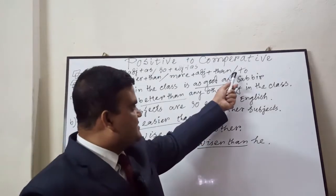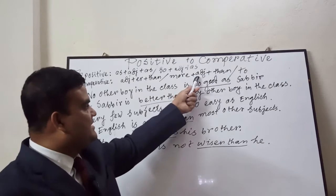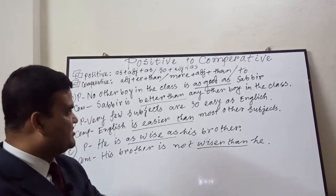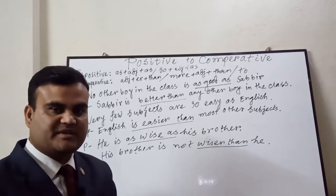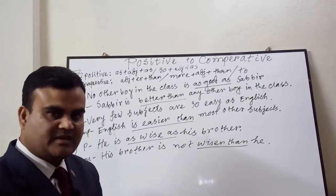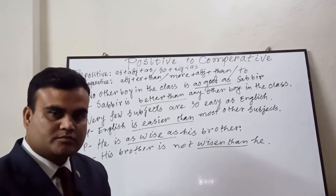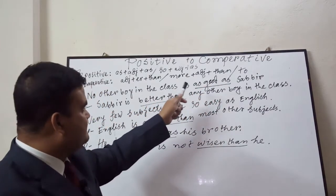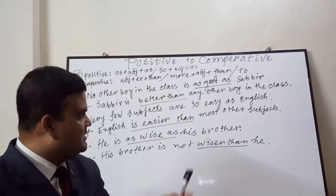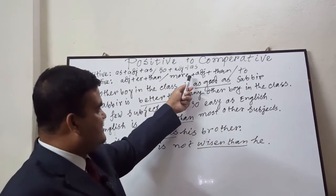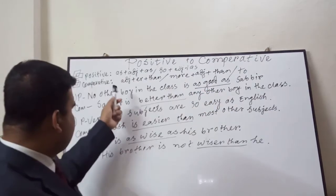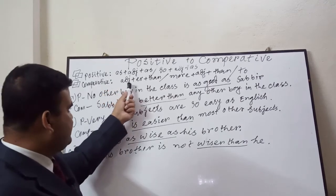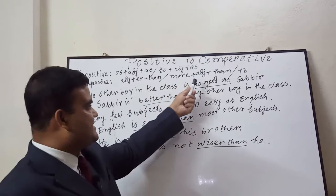And here is 'to' — we sometimes use 'to' when the adjective directly comes in comparative form. There are some adjectives that don't have a positive form. These adjectives directly come in comparative form, like: senior to, junior to, inferior to, superior to. So we use 'to' at the end of the adjective. To summarize: 'as + adjective + as' or 'so + adjective + as' is the gist to recognize positive, and adjective + '-er' + than, or more + adjective + than, or 'to' — this is for the comparative form.